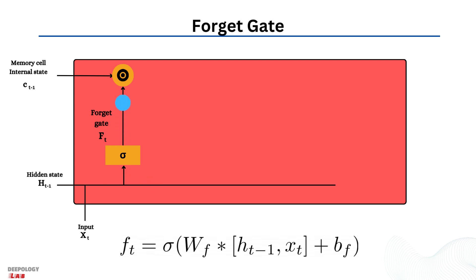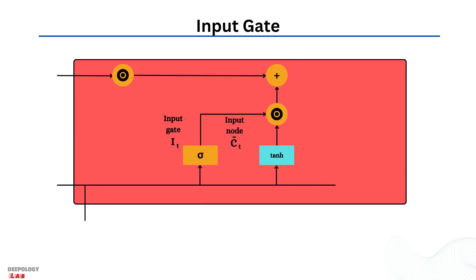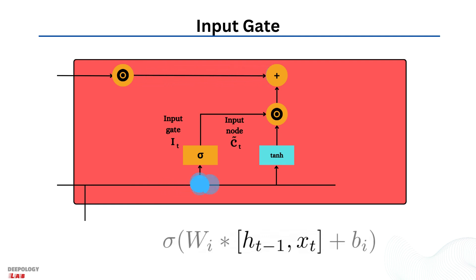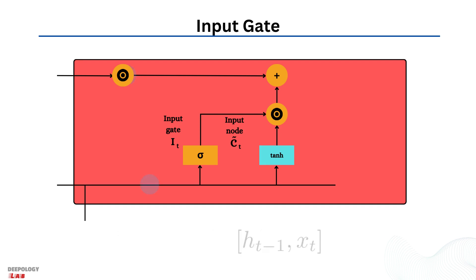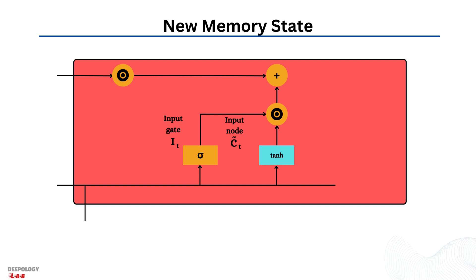In the next stage, the input gate and the new memory network are used to determine which new information from the current input data should be stored in the network's long-term memory. Both the input gate and the new memory network are individual neural networks that receive the same inputs — the previous hidden state and the current input data — which are also the same inputs provided to the forget gate. The input gate uses a sigmoid activation function and serves as a filter to identify the valuable components of the new memory vector, outputting values in the range from 0 to 1.